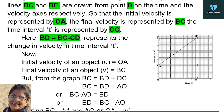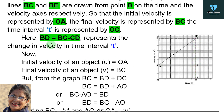Now here, BD equals BC minus CD. We can see from the graph that BD equals BC minus CD — if we take the long line BC and subtract line CD from it, we get BD. BD represents the change in velocity in time interval T.